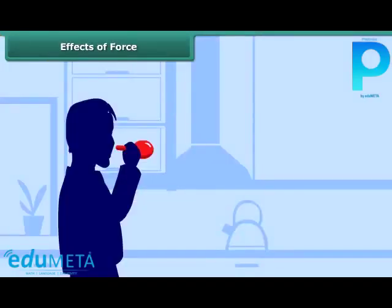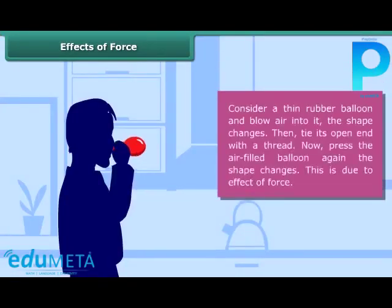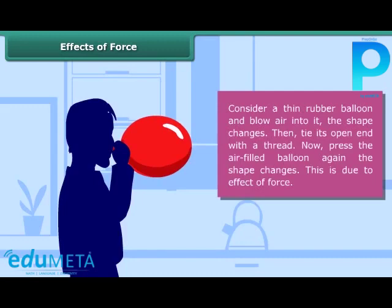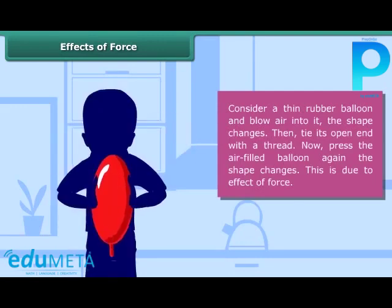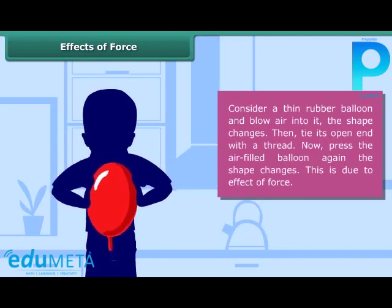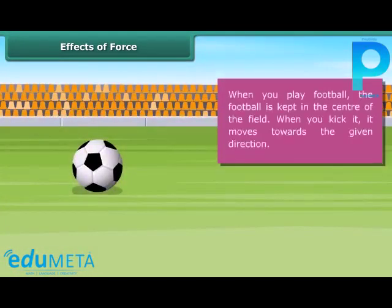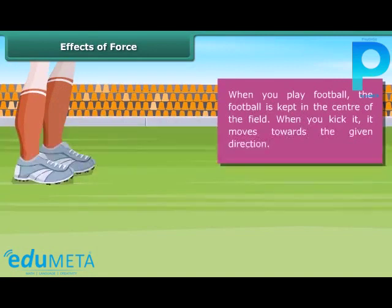The effects of force. Consider a thin rubber balloon and blow air into it — the shape changes. Then tie its open end with a thread. Now press the air-filled balloon; you will see again the shape changes. This is due to the effect of force. When you play football, the football is kept in the center of the field. When you kick it, it moves towards the given direction.